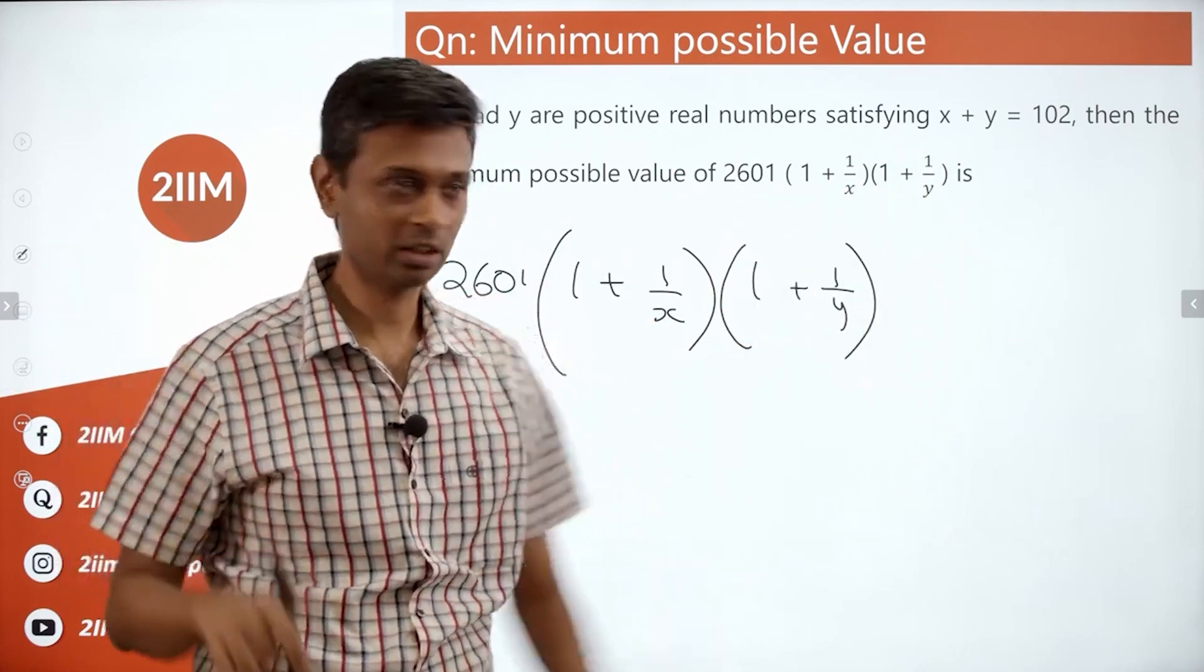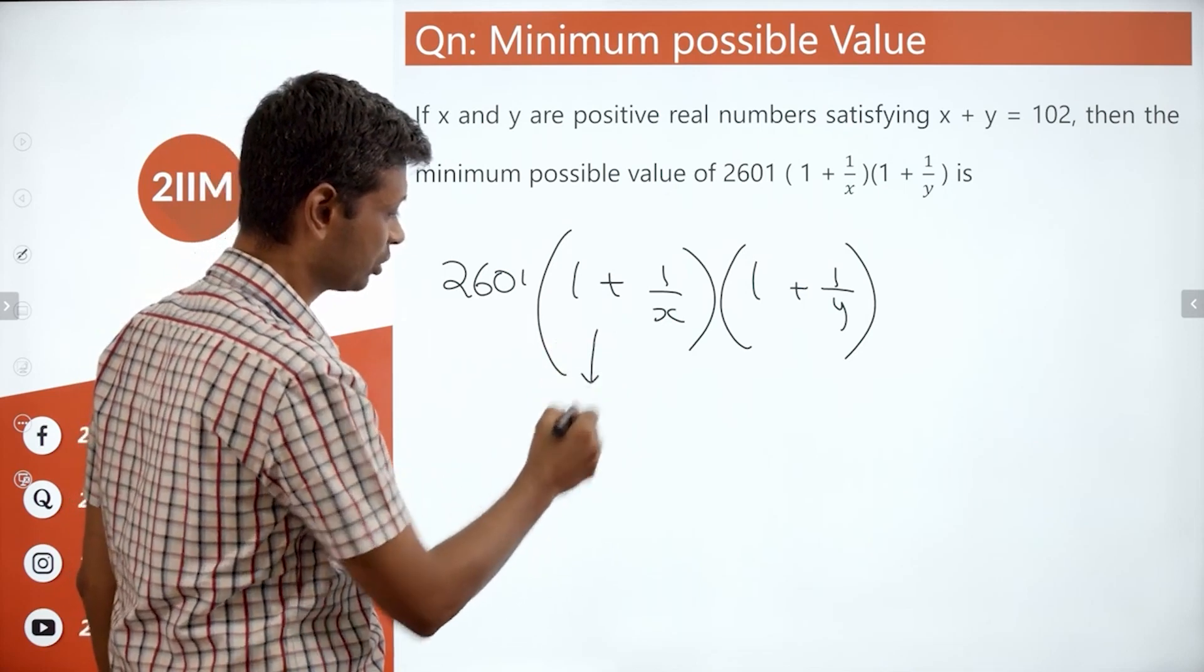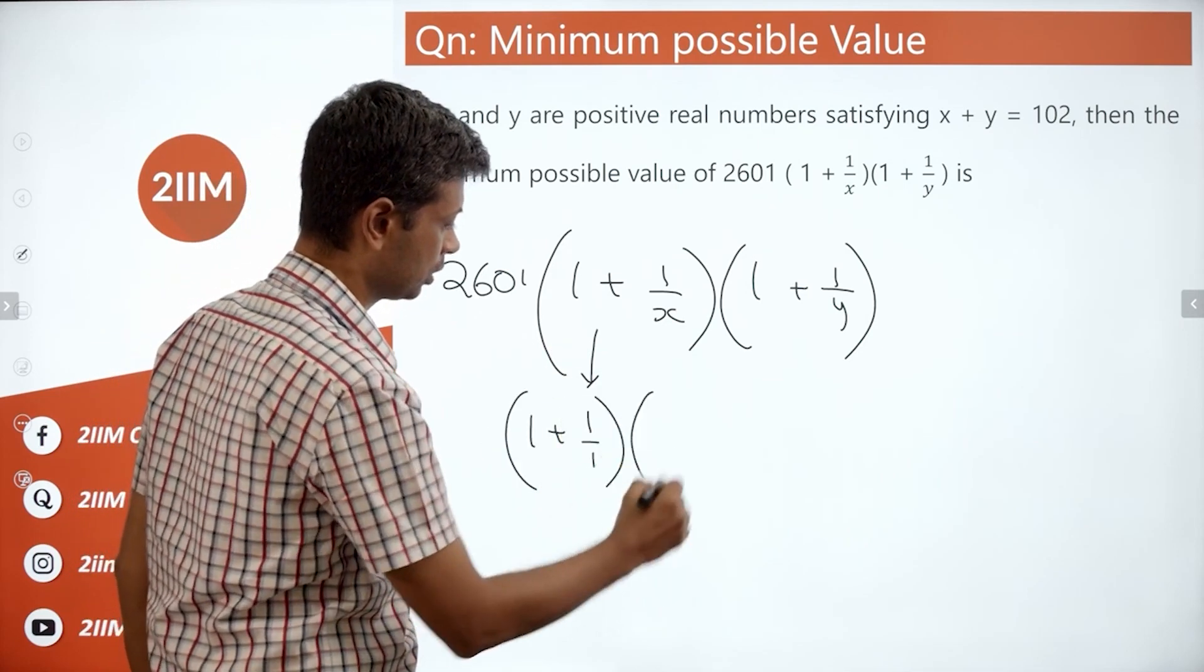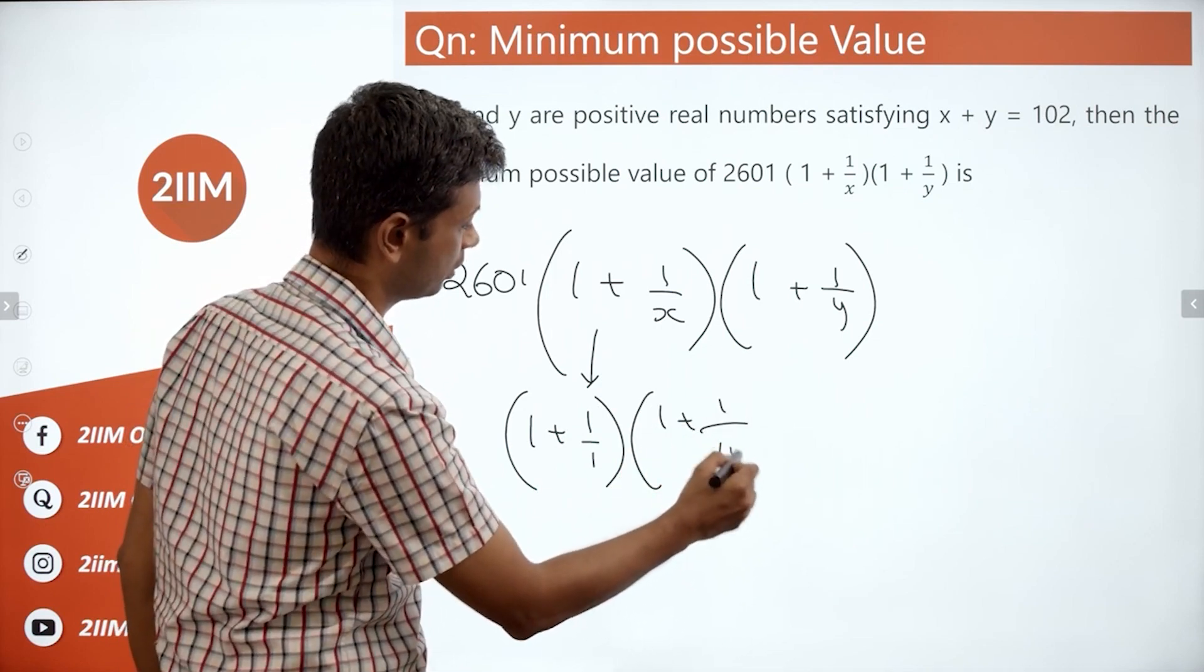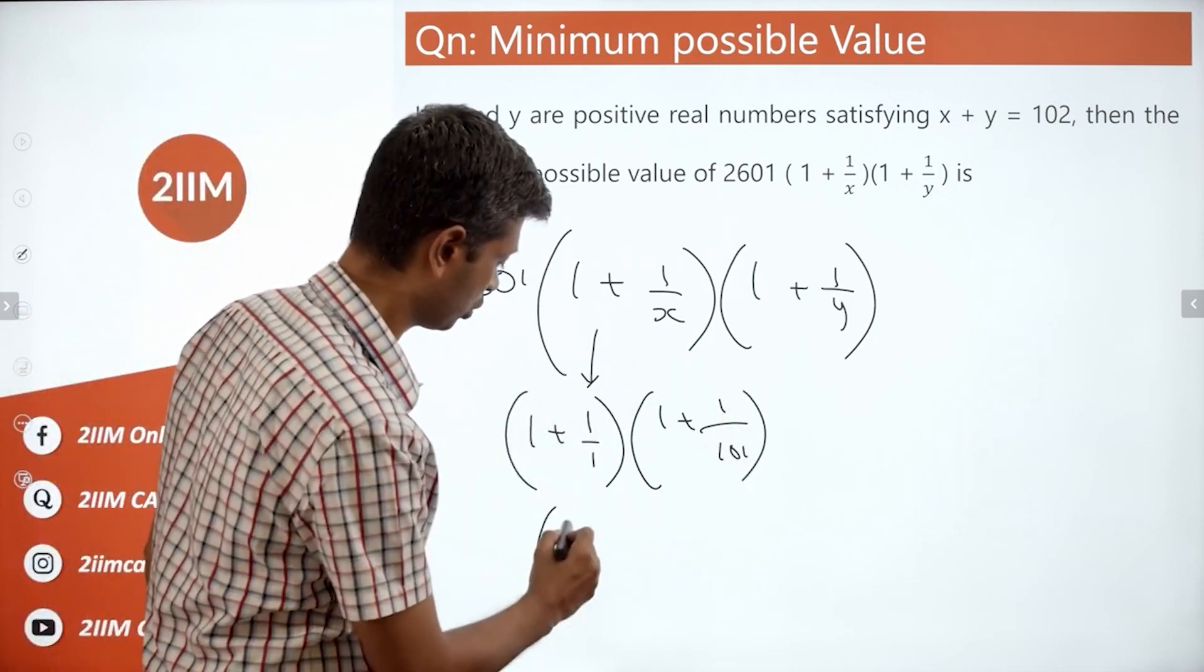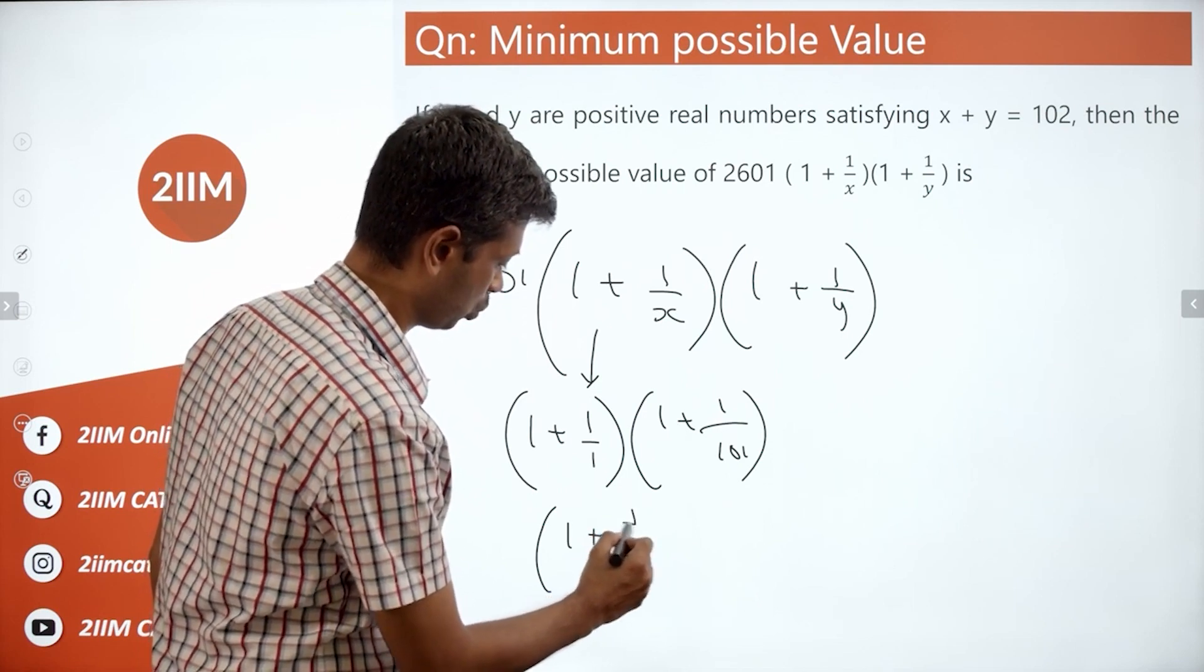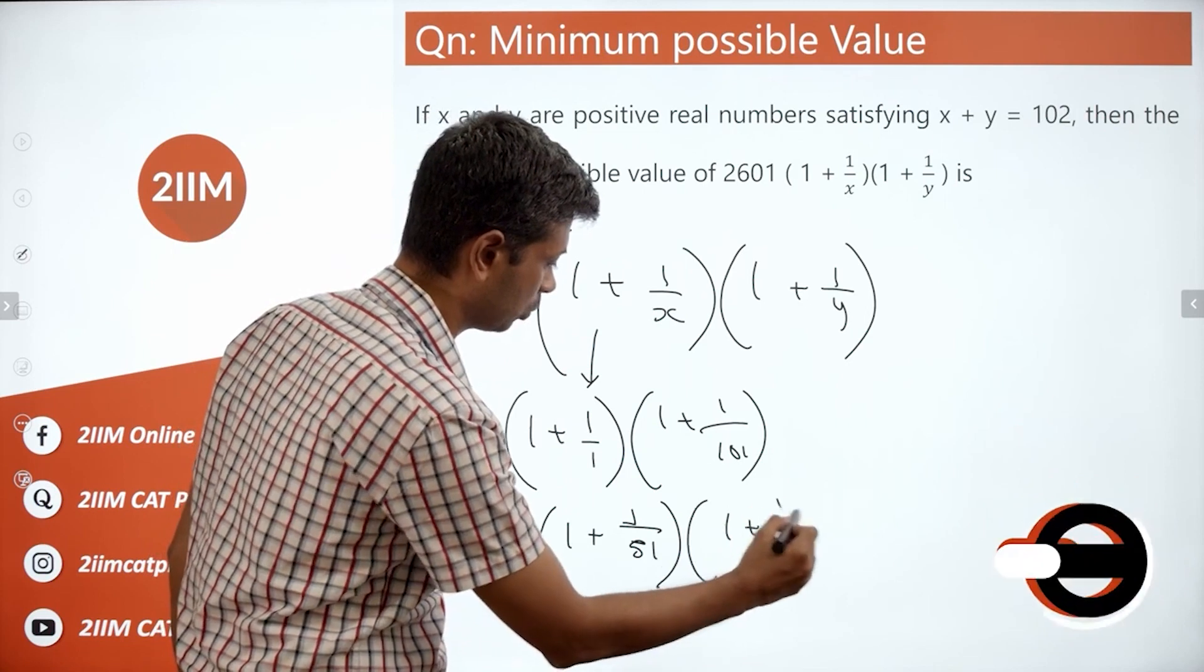Let's do that. Let's put x is 1, y is 101. You worry only about this (1 + 1/1) into (1 + 1/101). This is one possibility. Or we're talking about (1 + 1/51) into (1 + 1/51).